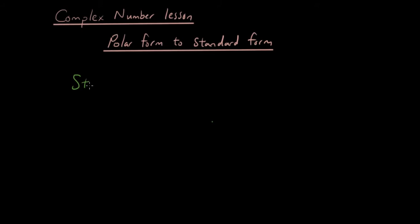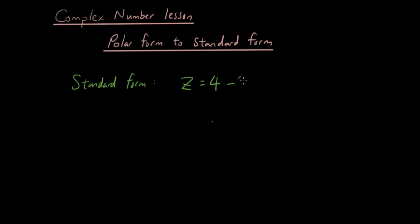So when we talk about standard form, we mean we express a complex number in terms of its real part, let's say 4, and its imaginary part — let's go negative this time — minus 2i. So the complex number is 4 minus 2i. And if I want to express it in polar form, the first thing I need to do is find its modulus.